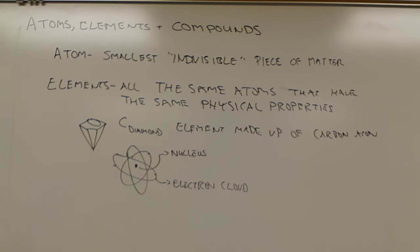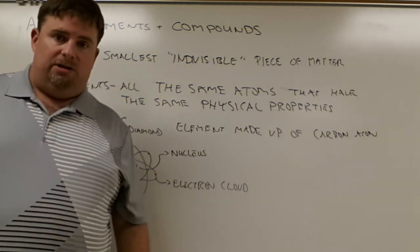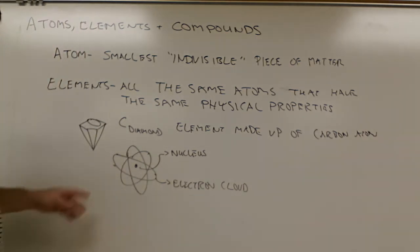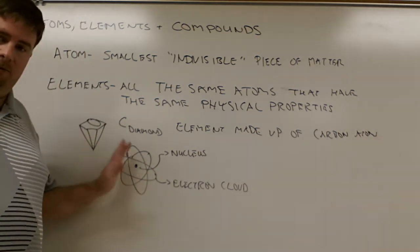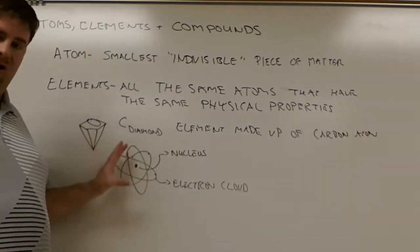The electron cloud itself, we can manipulate, we make electrons move. That's how we get electricity, right? So the electron cloud is easy to manipulate. We can knock pieces and parts off of atoms. It's harder when we get to the nucleus.